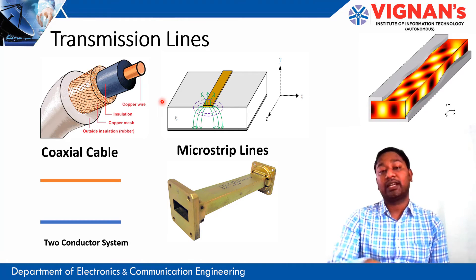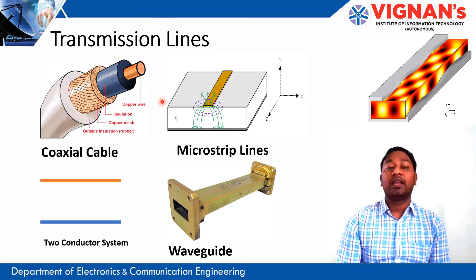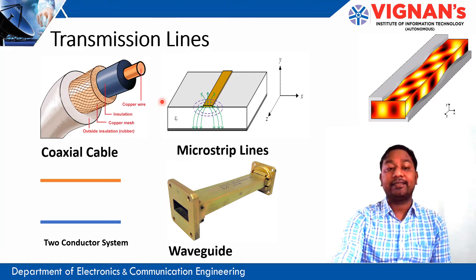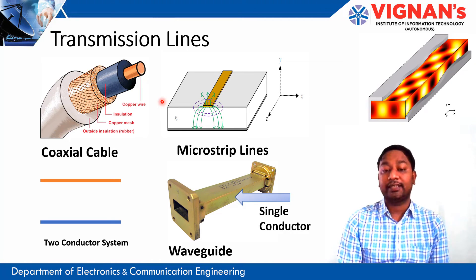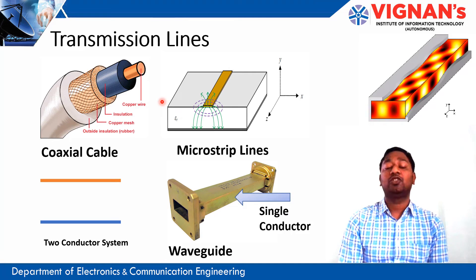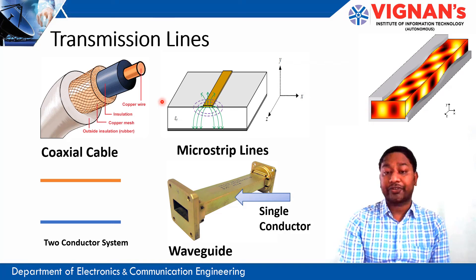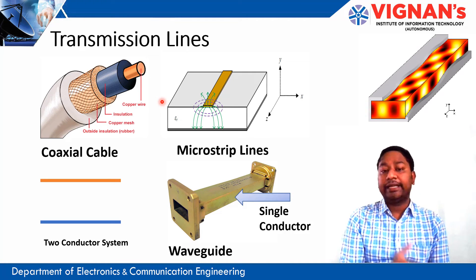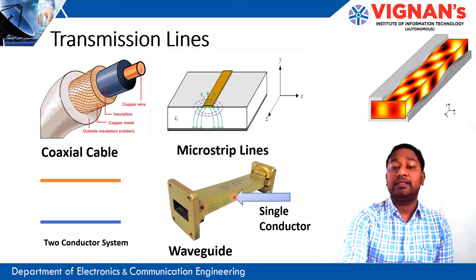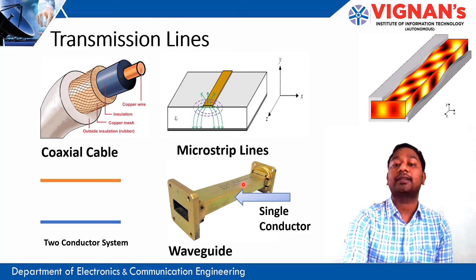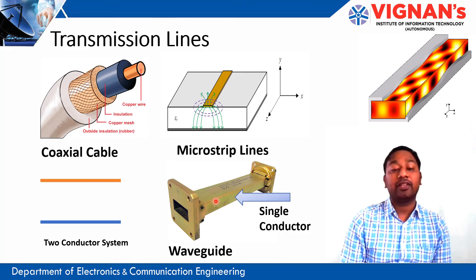The key difference between this special transmission line — called a waveguide — and earlier transmission lines is that all earlier transmission lines are two-conductor systems, whereas the waveguide is a single-conductor system. It guides the electromagnetic wave from one point to another. At higher frequencies, external electric fields do not affect the waveguide because it is a fully enclosed conductor system, so no external electric field interference occurs. That is why waveguides are used for high-frequency applications.